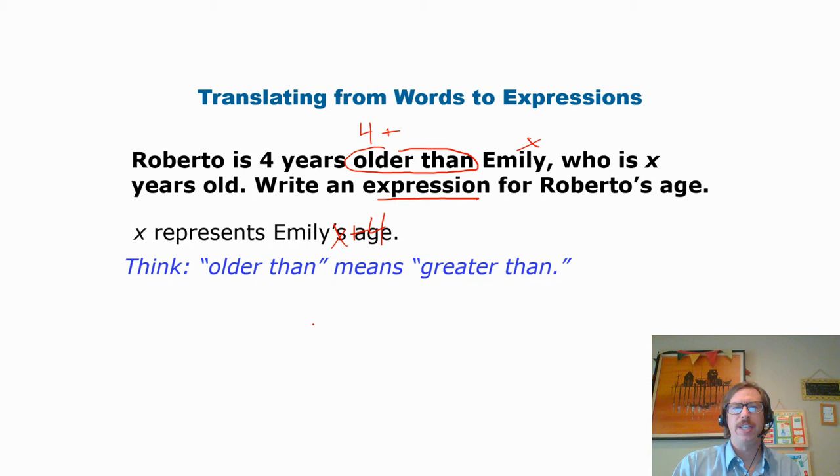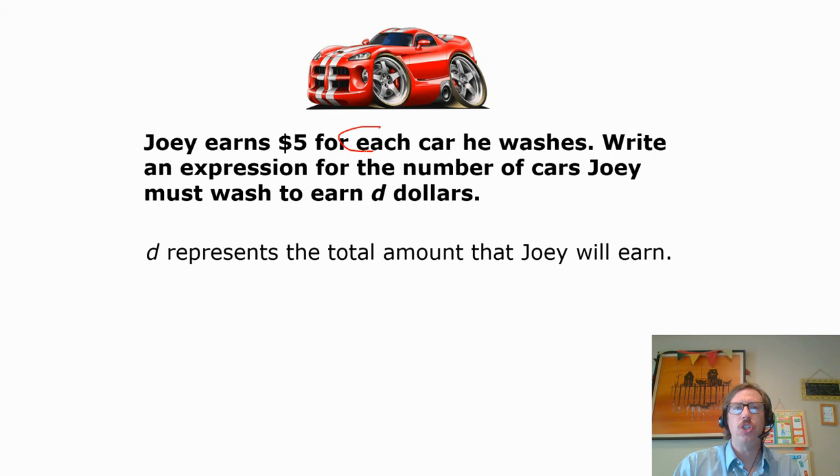What if we have Joey earns $5 for each car he watches? You should probably circle that word, each. Write an expression for the number of cars Joey must watch to earn D dollars. So D is the total amount of money he'll earn. That's the total. So I'm going to put that with an equal sign. Now I need to write the expression over here, the other half of the equation. He earns $5 each car. Let's call a car C. And if it's each time, that means $5 per, or $5 each car, we're going to write something like 5C. You could also put, oh, if we wanted to put the expression in terms of D dollars, we could do D divided by 5. That would move the 5 over there. And the total cars are going to be those dollars divided by 5.